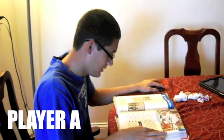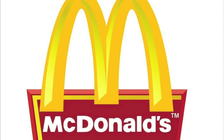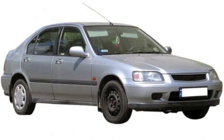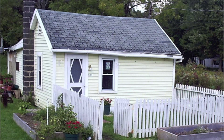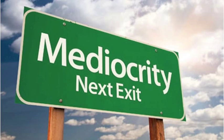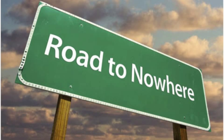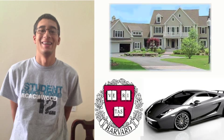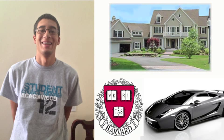Rather than learning from his mistake, player B continues to live life like there's no tomorrow. This causes player B to end up with a mediocre job, a mediocre car, a mediocre house, and ultimately a mediocre life — and eventually he loses all of his basketball skills.